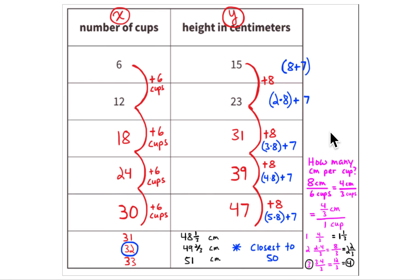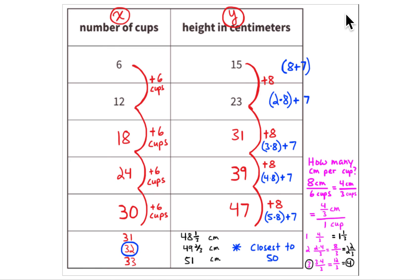The next activity is going to look at the same situation, but creating a graph with these numbers from this table, writing the equation, and answering a few other questions. This is Activity 2, and we're going to go on to Activity 3 in a moment.